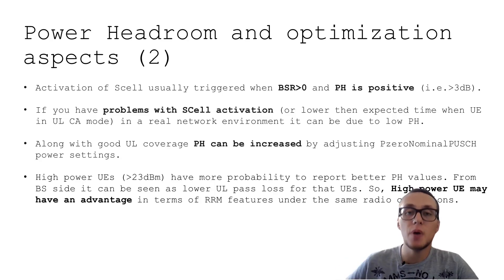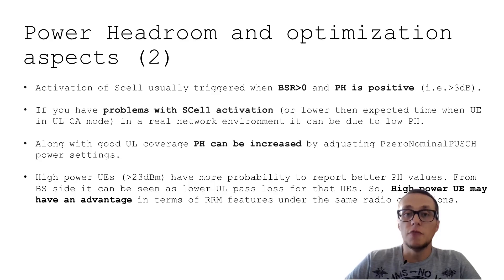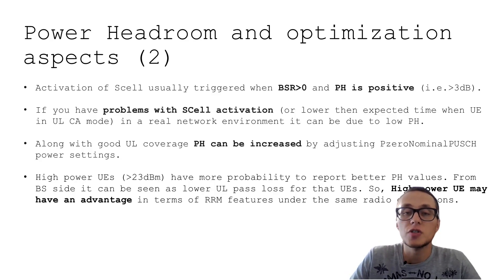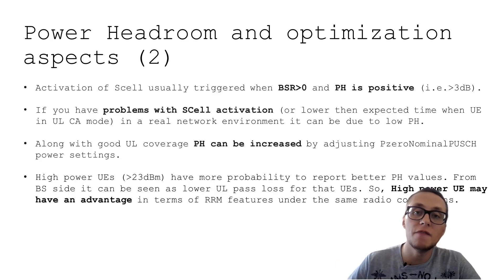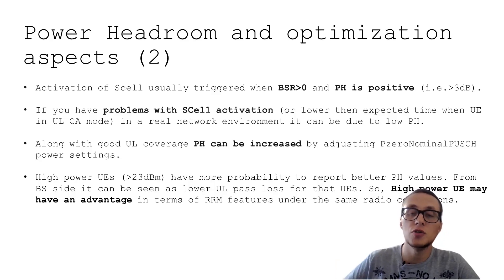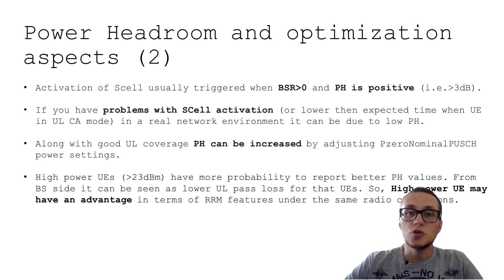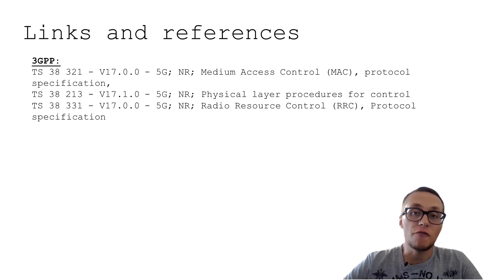Also, if your network has user equipment related to a higher power class — more than 23 dBm — there is obviously a greater probability that such users will report better power headroom values. They may have a slight advantage in terms of uplink coverage and activation or deactivation of certain features. This should also be taken into account during optimization.